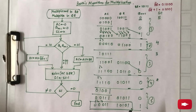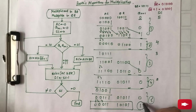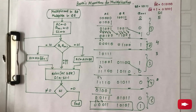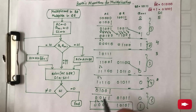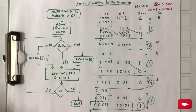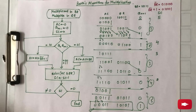The final value of Q_N+1, which is 1, is the original sign bit of the multiplier and is not considered as part of the product. This is your final answer. This was Booth's algorithm for multiplication. Thank you.